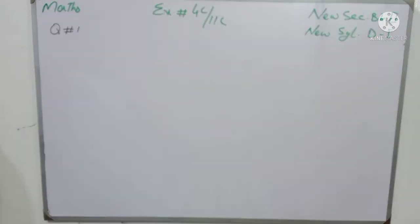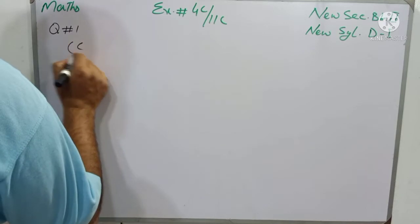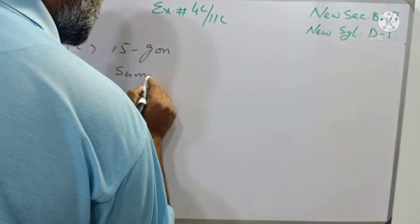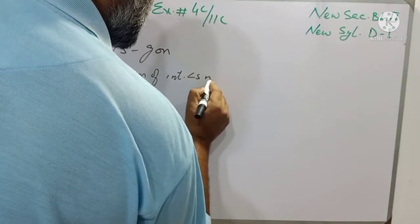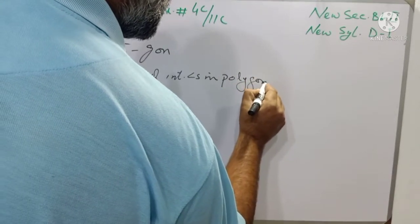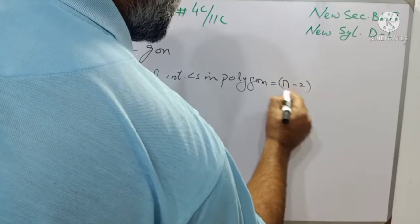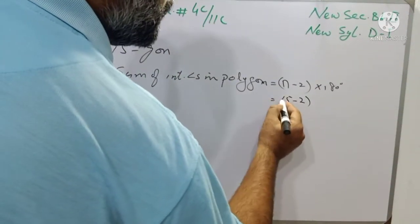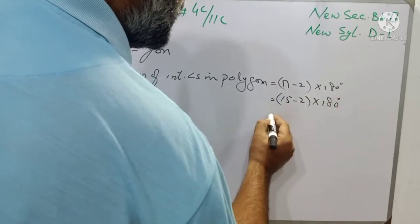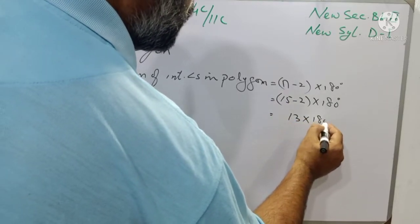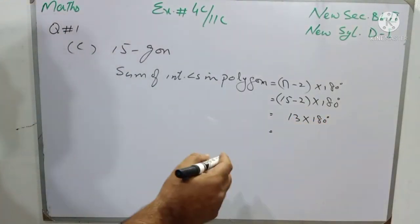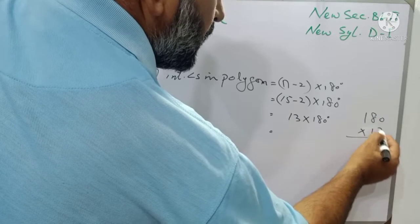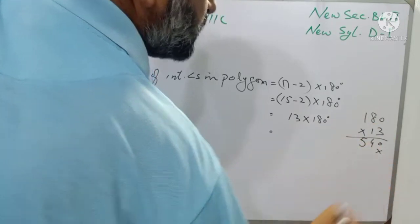Part C of the same question is a 15-gon. Again we use the same formula: sum of interior angles in a polygon equals (n minus 2) into 180 degrees. With n = 15, it is 15 minus 2 multiplied by 180 degrees. 15 minus 2 means 13, multiplied by 180 degrees. Now 180 will be multiplied with 13: 3 times 0 is 0, 3 eights are 24, carry 2, 3 ones are 3 and 2 makes 5.